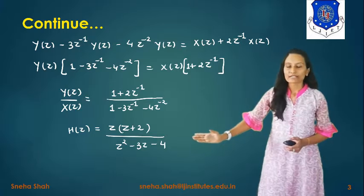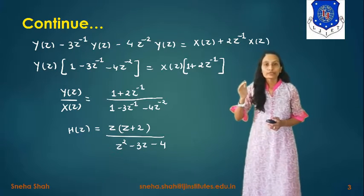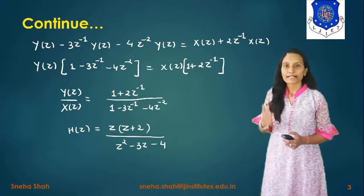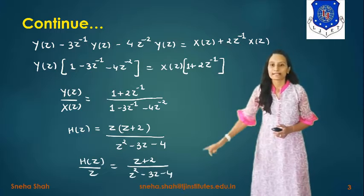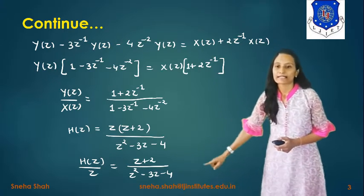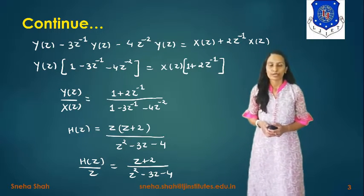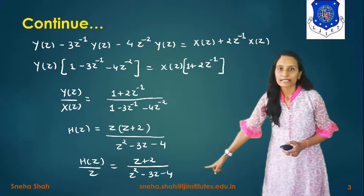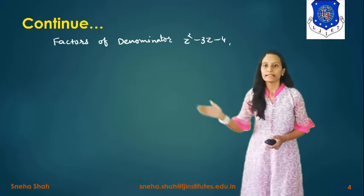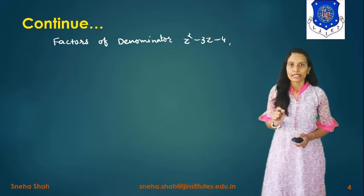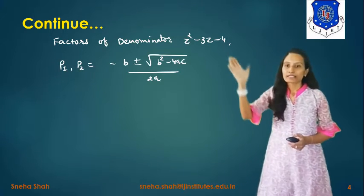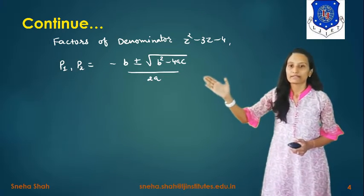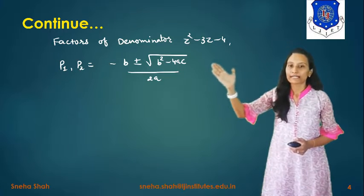Now we have to find the inverse Z-transform of H(z). This kind of example is solved using the partial fraction expansion method. For that, first we find H(z)/z, so the term becomes H(z)/z = (z + 2) / (z² - 3z - 4). The next step is to find the poles from the denominator by factorizing z² - 3z - 4. The values are a = 1, b = -3, c = -4, and we apply the quadratic formula: (-b ± √(b² - 4ac)) / 2a to find poles P1 and P2.